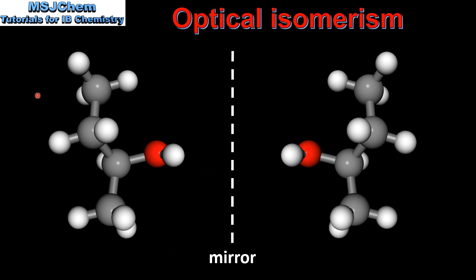Here we have the 3D models of the two optical isomers of butan-2-ol. As you can see, they are mirror images of each other and non-superimposable.